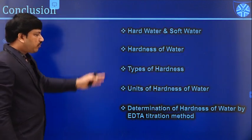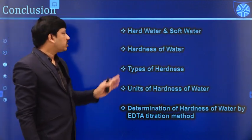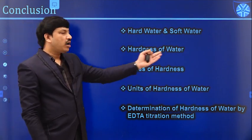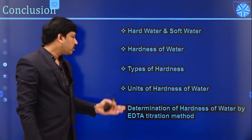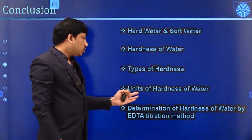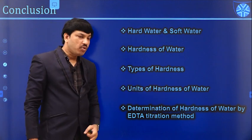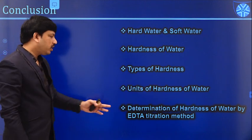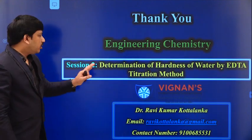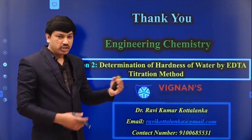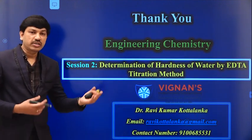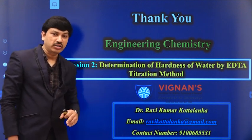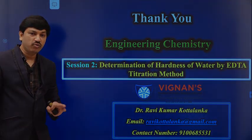In the first two sessions, we covered hard water and soft water, hardness of water, types of hardness, units of hardness, and determination of hardness by EDTA titration method. That concludes session two. In the next session, we will discuss batteries — introduction and classification of batteries. Thank you.